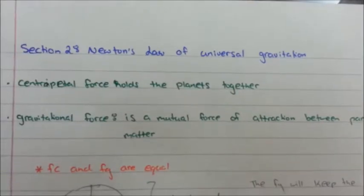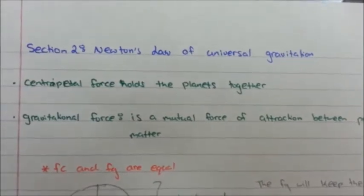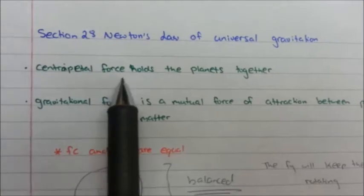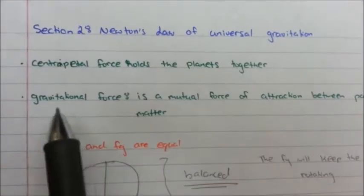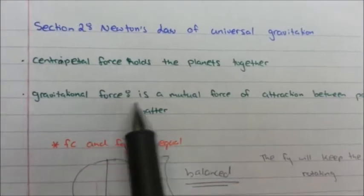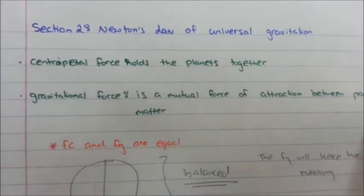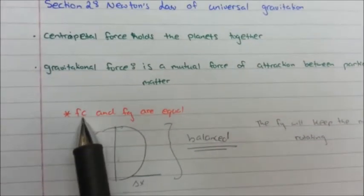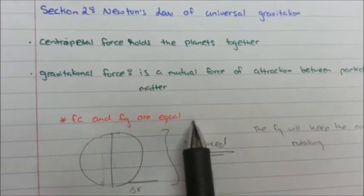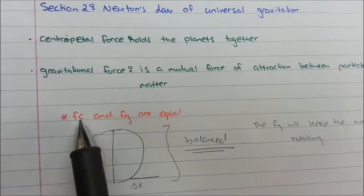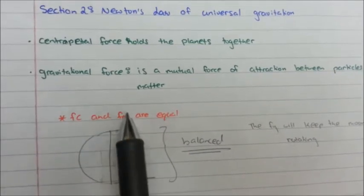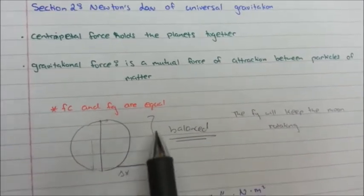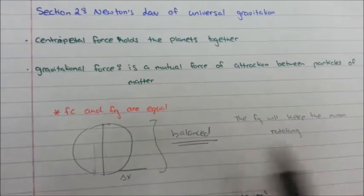Our second lesson will be talking about Newton's law of universal gravitation. Centripetal force holds planets together. Gravitational force is a mutual force of attraction between particles of matter. FC and Fg are equal: FC, which is centripetal force, and Fg, which is gravitational force, are both equal.